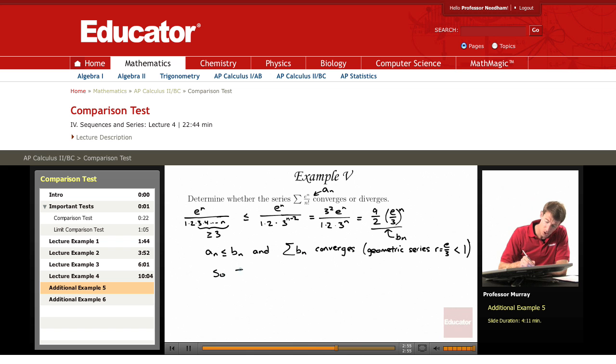So our smaller series an must also converge by the comparison test. Not the limit comparison. This is the original comparison test here.